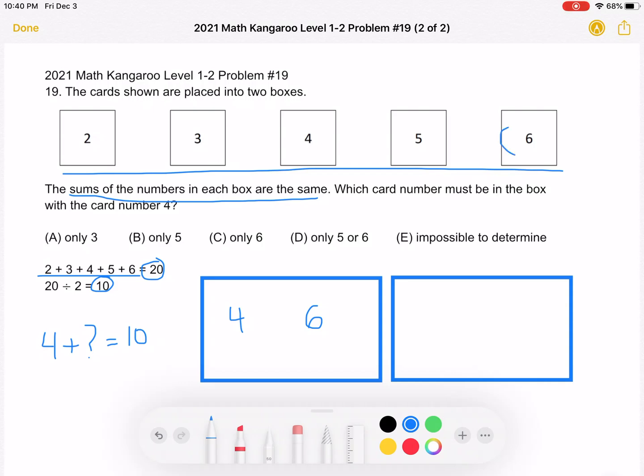So, that card must be 6. And then over here, we'll have 2, 3, 5. And 2 plus 3 plus 5 is 10. 4 plus 6 is 10.